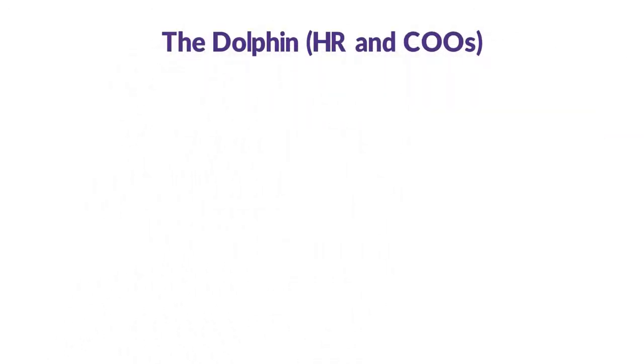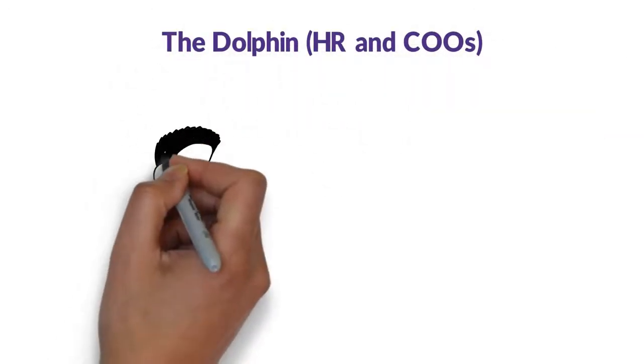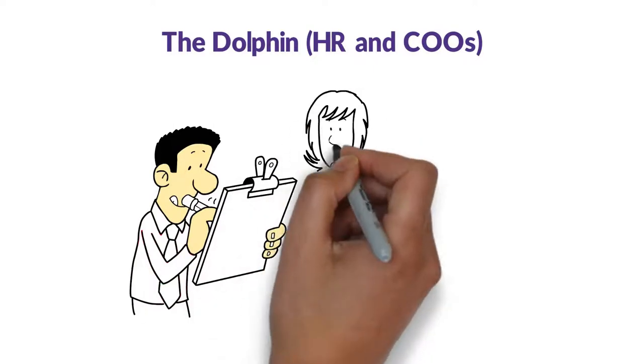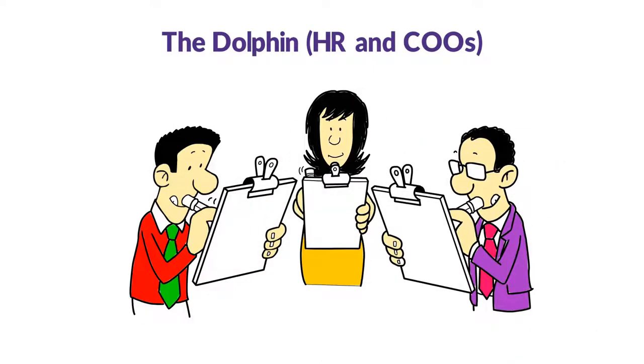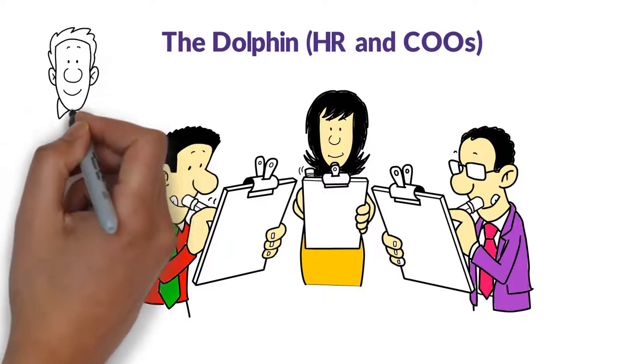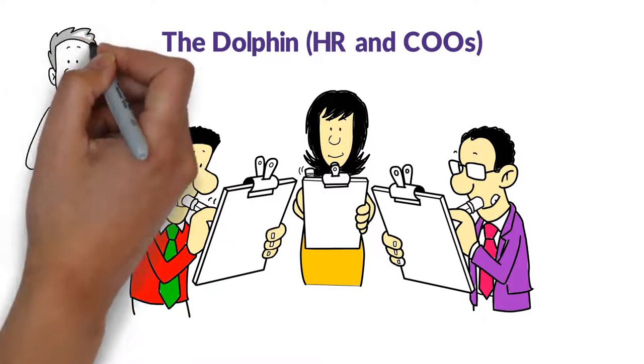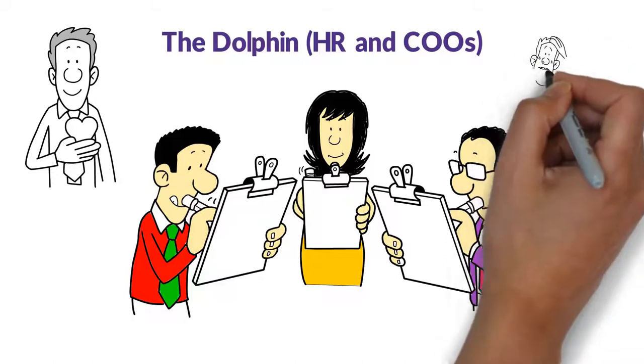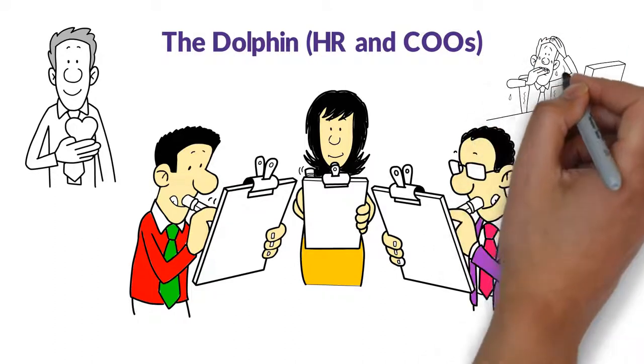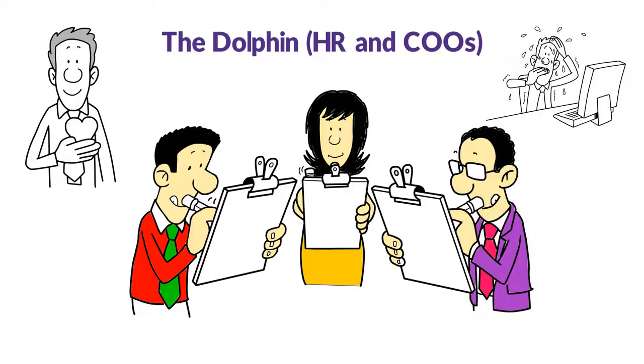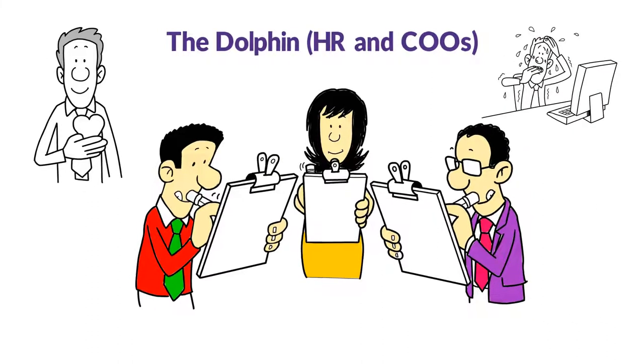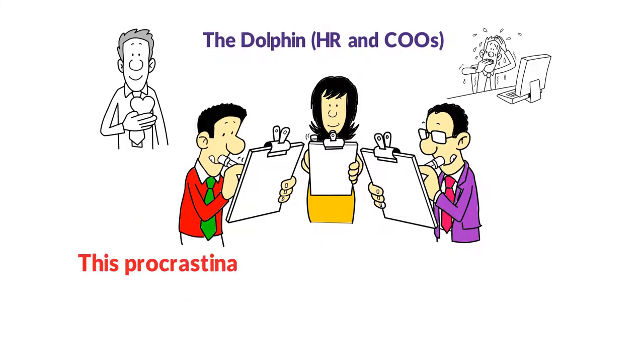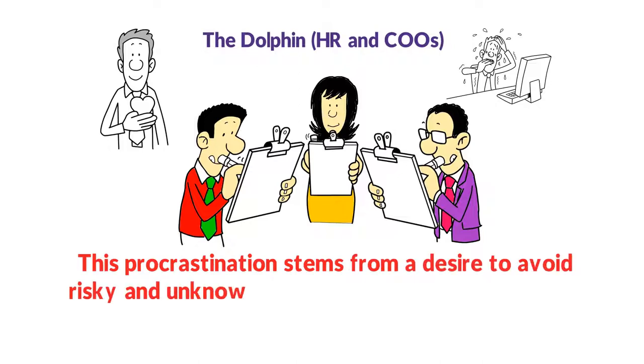The Dolphin. HR and COOs. The fourth and final style, the dolphin, is open and unassertive, warm, supportive, and reliable. However, the dolphin is sometimes seen by others as compliant, soft-hearted, and acquiescent. Dolphins seek security and like to feel that they belong. Like the elephant, the dolphin is slow at taking action and making decisions. This procrastination stems from a desire to avoid risky and unknown situations. Before dolphins take action or make decisions, they have to know how other people feel.